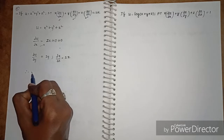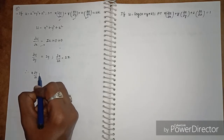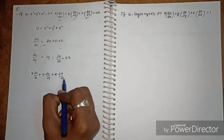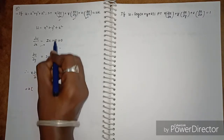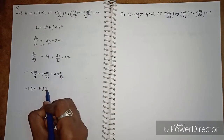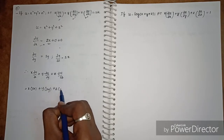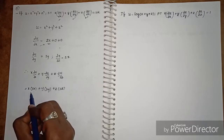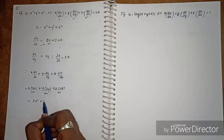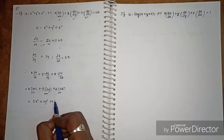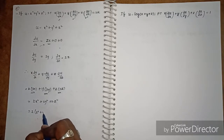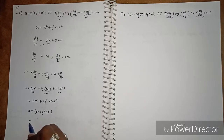Now substituting into the expression: x·∂u/∂x + y·∂u/∂y + z·∂u/∂z. Substituting the values: x·(2x) + y·(2y) + z·(2z) = 2x² + 2y² + 2z². Therefore it equals 2(x² + y² + z²), which is 2u. Hence proved.